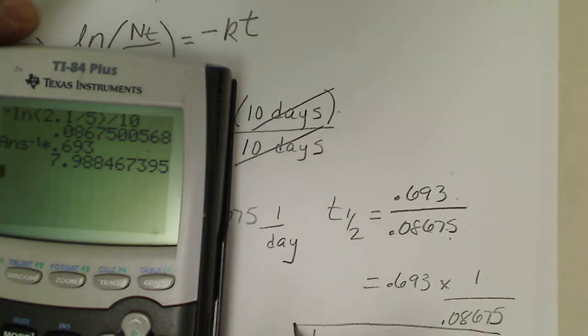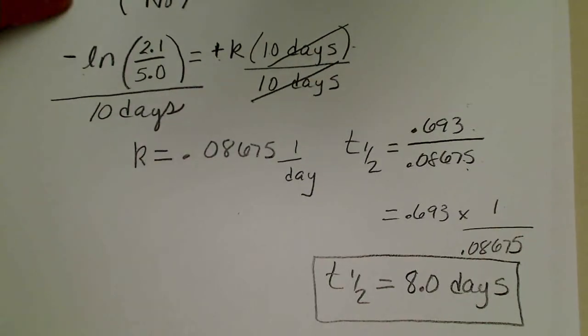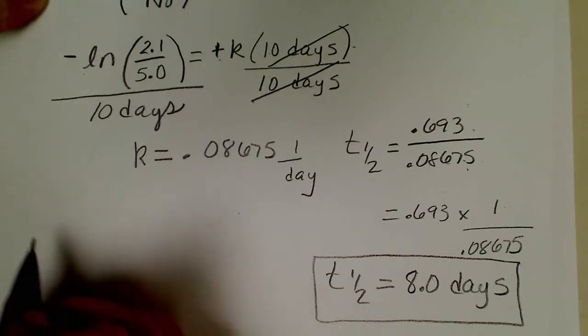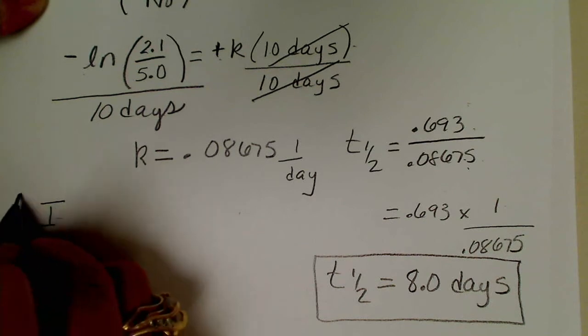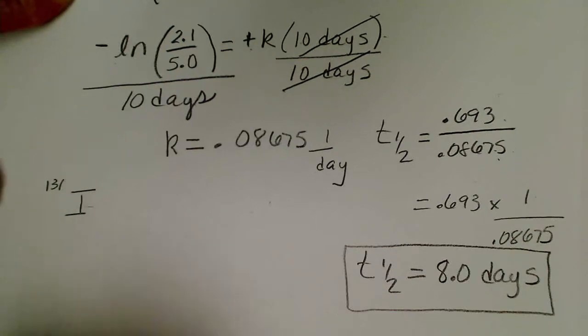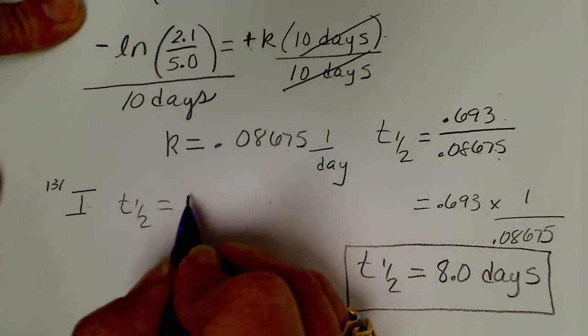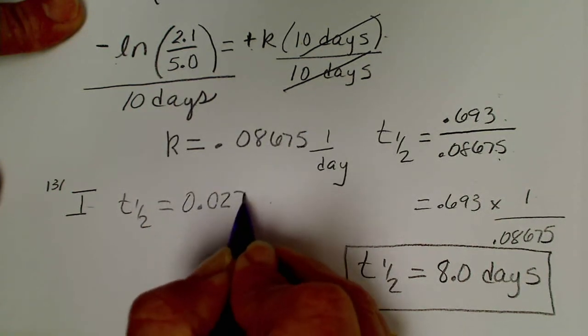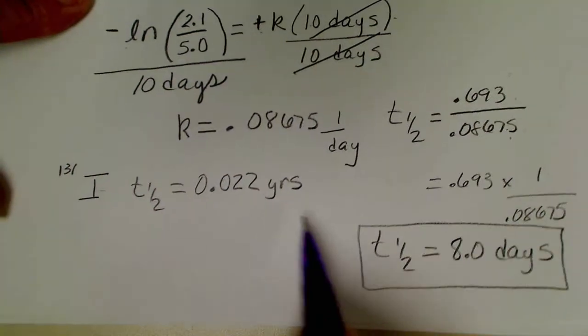Since we have our book we can check our answer. We saw on a previous slide this is in the book: iodine-131 has a half-life in terms of years, 0.022 years.